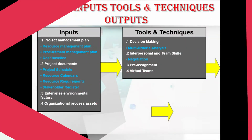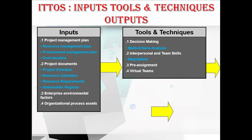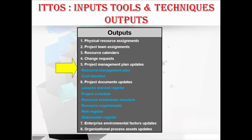In the inputs, we have the project management plan — consisting of the resource management plan, procurement management plan, and cost baseline — and the project documents: project schedule, resource calendars, resource requirements, and stakeholder register, plus enterprise environmental factors and organizational process assets. For tools and techniques, we have decision making (multi-criteria analysis), interpersonal and team skills (negotiation), pre-assignment, and virtual teams.